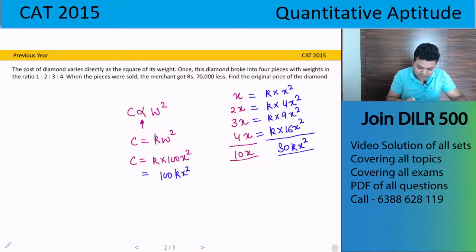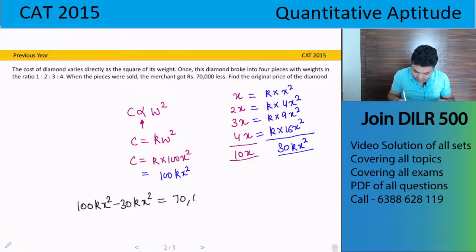Now it says, when the pieces were sold, the merchant got rupees 70,000 less. Because here cost is 30k x square and here 100k x square. So because it broke, his loss was 70,000. So that means 100k x square minus 30k x square equals to 70,000.